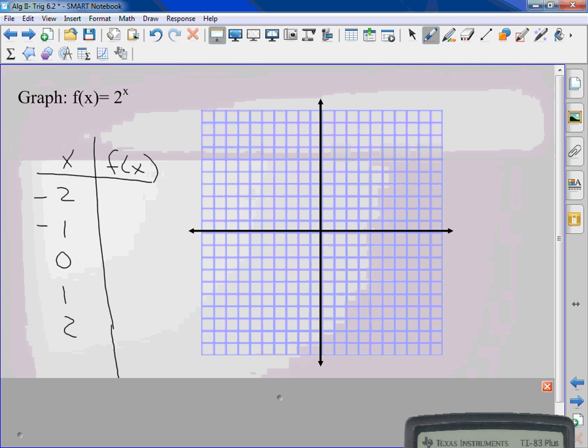2 to the negative second power. 2 to the negative second actually means 1 over 2 squared, which is 1 fourth. If it's a negative exponent, it belongs on the opposite side. If it's on the top, it belongs on the bottom. 2 to the negative first means 1 over 2 to the first, which is just 1 half.